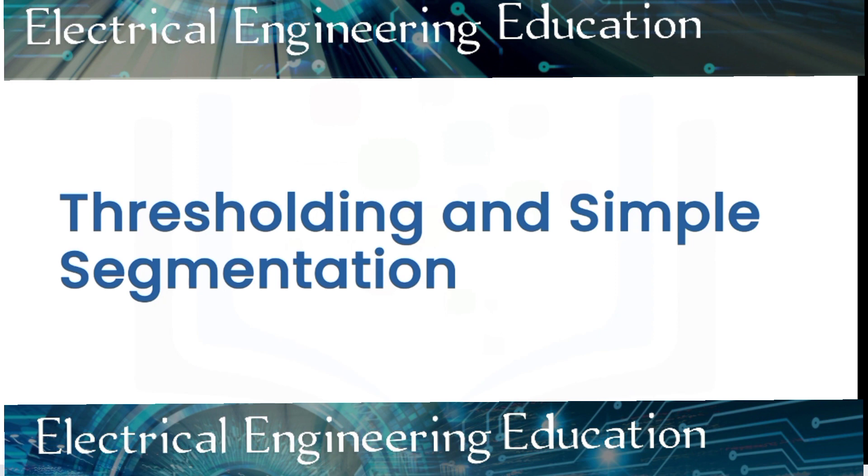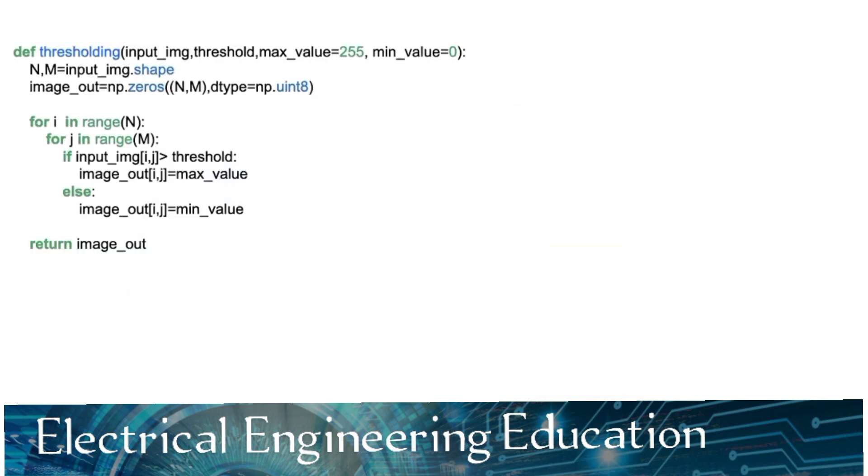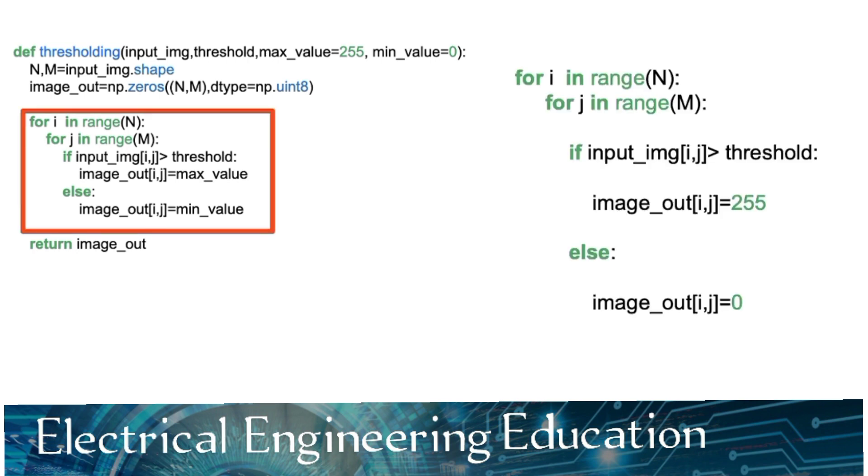A threshold function applies a threshold to every pixel. It can be used in extracting objects from an image. This is called segmentation. The following function applies a threshold to the input array, input image array, and outputs the result. The following portion of the code will cycle through each pixel, ij. If the pixel is greater than the threshold, it will set a pixel in the array image out to some value, usually 1 or 255. Otherwise, it will set it to another value, usually 0.